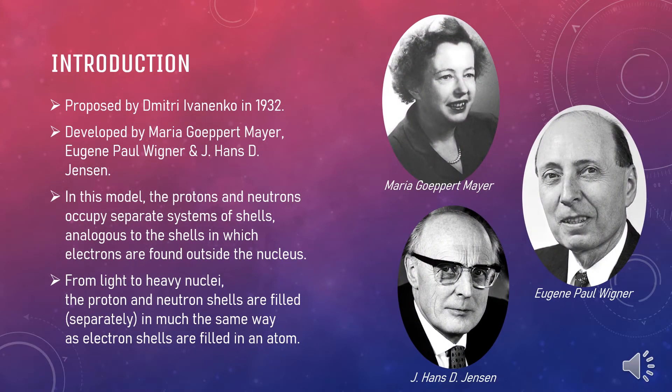Many models describe the way protons and neutrons are arranged inside a nucleus. One of the most successful and simple to understand is the shell model. It was first proposed by Dimitri Ivanenko in 1932 and was later developed by Maria Goeppert-Mayer, Eugene Paul Wigner, and J. Hans D. Jensen in 1949. This model uses the Pauli exclusion principle to describe the structure of the nucleus in terms of energy levels.